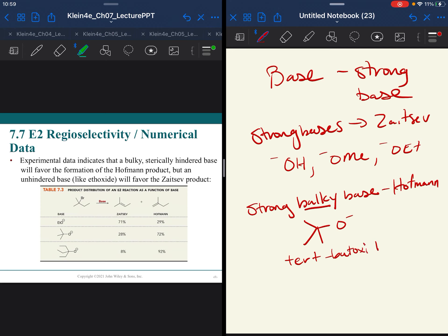Tert-butoxide. Now, this may be written as T-B-U-O-K, that's potassium tert-butoxide. You may see it written, drawn out like this. The other way might be to put the potassium first, and then it would be K-O-T-B-U, something like that. But you are going to see this bulky base a lot.